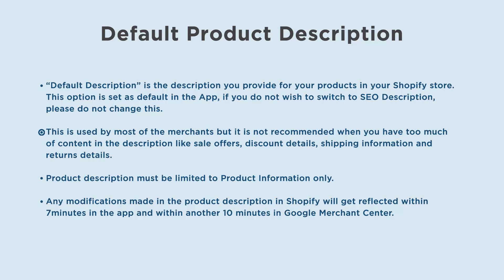Product descriptions like sale offers, discount details, shipping information, and returns details should be avoided. Product description must be limited to product information only. Any modifications made in the product description in Shopify will get reflected within 7 minutes in the app and within another 10 minutes in Google Merchant Center.